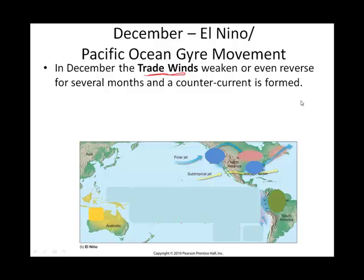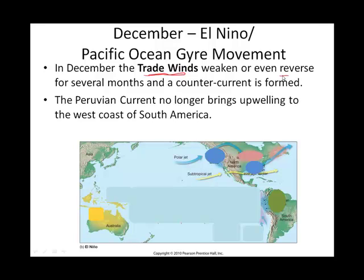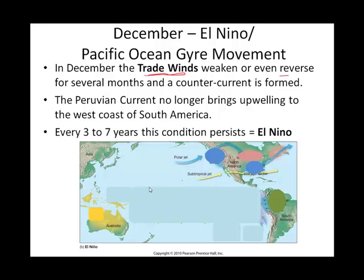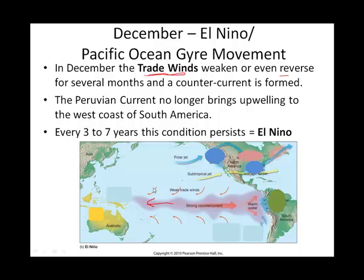Sometimes those easterly trade winds can even reverse themselves, and that has consequences for all the ocean gyres. What happens to the Peruvian current along the west coast of South America is it's not as strong as it was. You actually see a westerly counter current going, and this would be at our intertropical convergence zone.